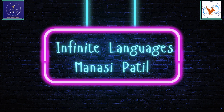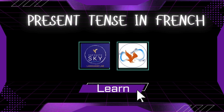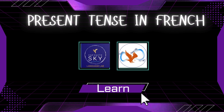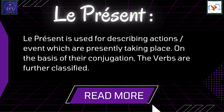Hello everyone, welcome back to Infinite Languages. Today we are diving into the fascinating world of French grammar, focusing on the present tense of ER, IR and RE verbs. The present tense in French, known as le présent, is used to describe actions happening right now or habitual actions. It is similar to the present or present continuous tense in English and is one of the most basic yet essential tenses in the French language.